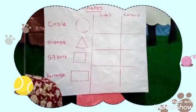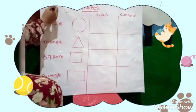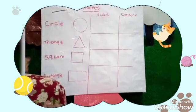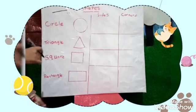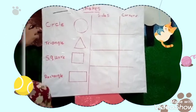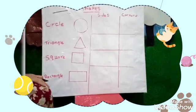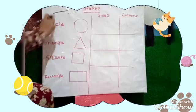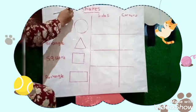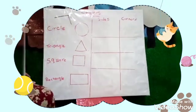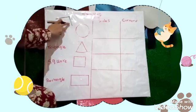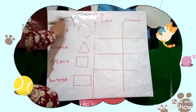If I draw a line like this, we call it a side. We call it a side. And this one? Another side. So how many sides do I have? How many? Two sides.